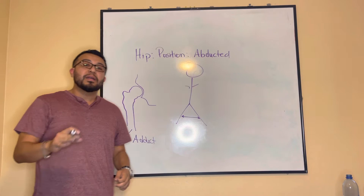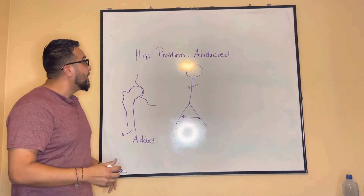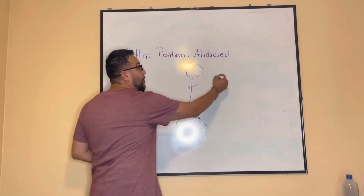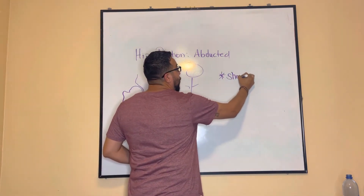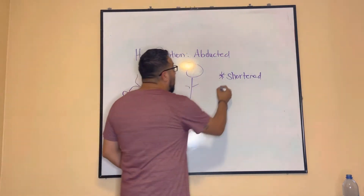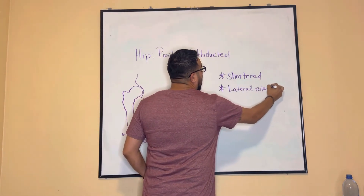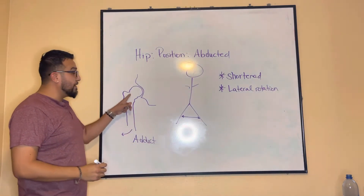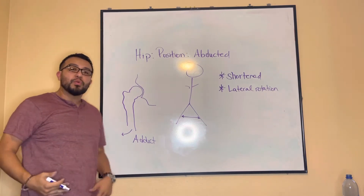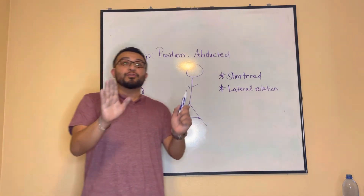You need to know how to identify when a hip has popped out of its socket. The affected leg is going to be shortened, and there's going to be lateral rotation. Make sure you can identify a shortened leg — one leg longer than the other — and lateral rotation of that extremity. That tells us the femoral head has popped out of its socket; the muscles have pulled it up, which is why it's shorter than the other side.